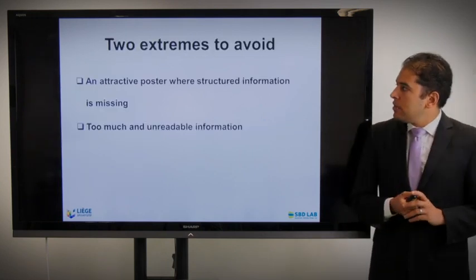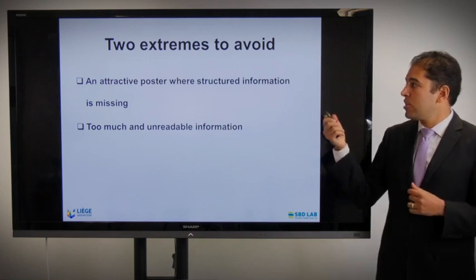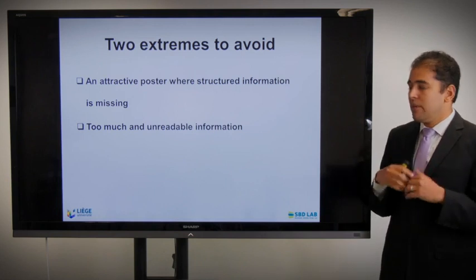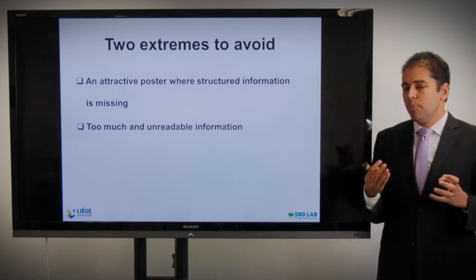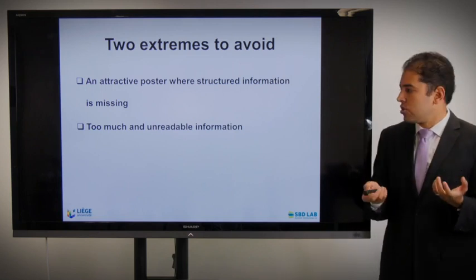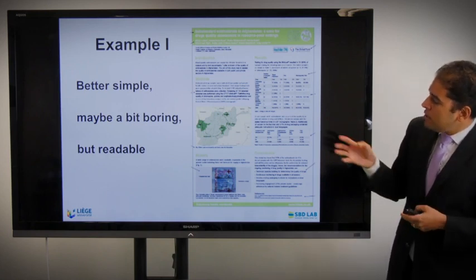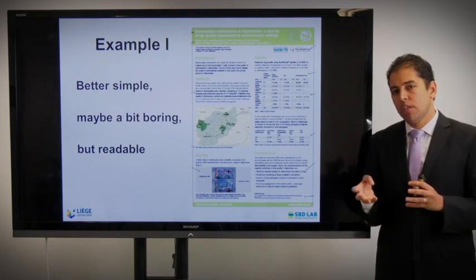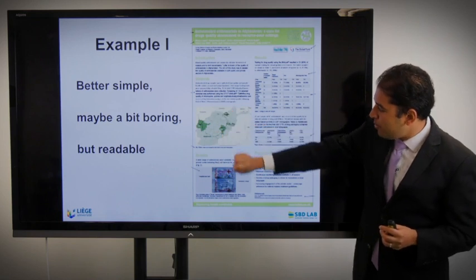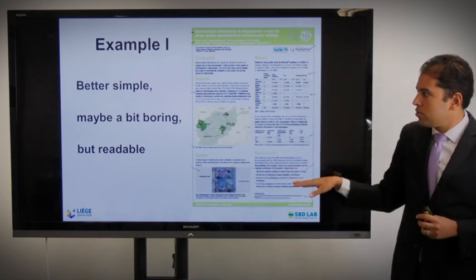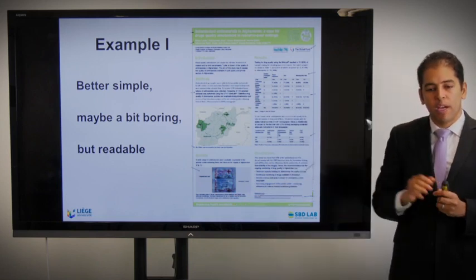As a conclusion, there are two extremes to avoid: an attractive poster where structured information is missing, and too much unreadable information with poor structure. When you do a poster, we don't need to see a lot of information — we need to see a structure. Here is a very simple poster example: readable, well-structured with large font, following an up-down path. Being readable and simple is better than being non-readable but very graphical.